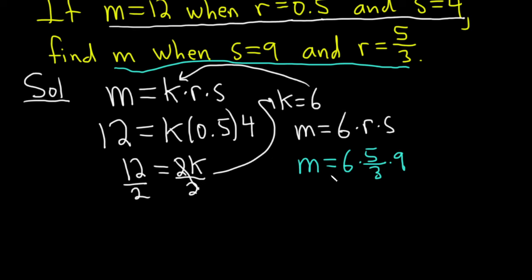Let's see. I think we can do some simplification. 3 goes into 6 twice, so m is equal to 2 times 5 is 10, times 9 is 90. I hope this has been helpful. Good luck.